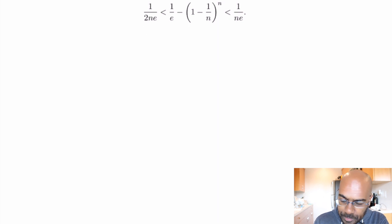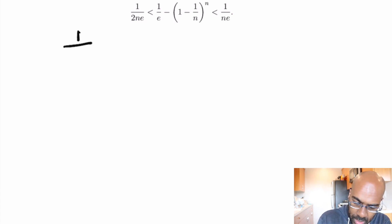Alright, so let's get ourselves started. The first thing I want to do is eliminate this 1 over e factor right over here. To do that, we'll subtract it off so we get this inequality is equivalent to 1 over 2ne minus 1 over e being less than